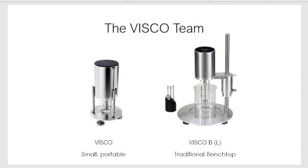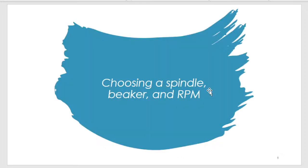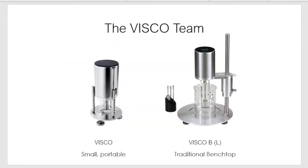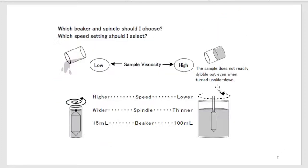Today we're going to talk about two products, but the videos shown are only of the VSCO. The VSCO title has two viscometers: the VSCO, which is the portable one, and the VSCO BL, which is the benchtop version. While they use different spindles and accessories, in general for the smaller VSCO: for low viscosity, choose a smaller beaker, higher speed, and wider spindle; for higher viscosity, use lower speed, thinner spindle, and the large beaker.